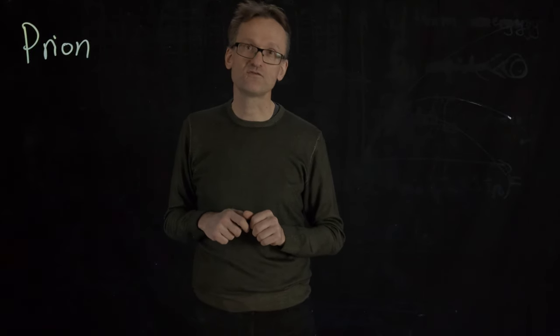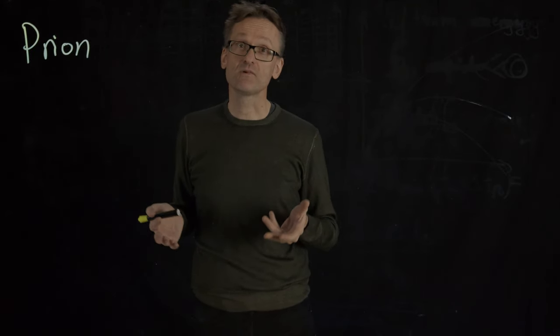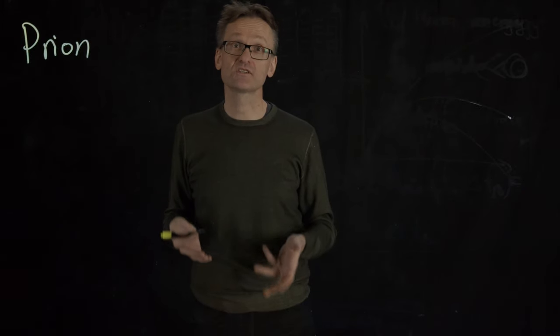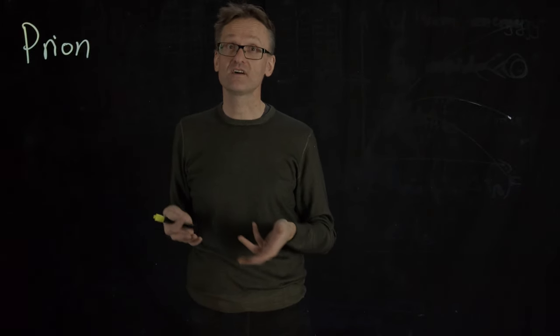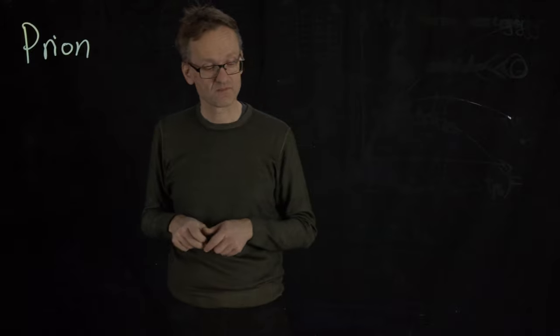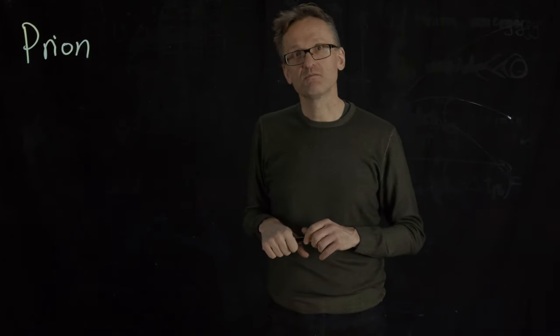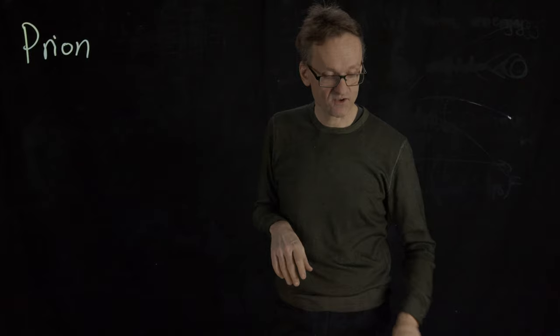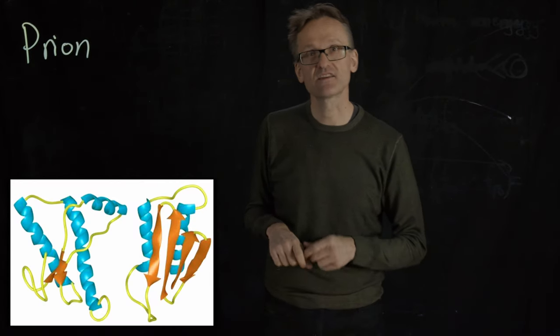And you might have heard that roughly at the same time we had this so-called mad cow disease, which is another example of a disease caused by prions. So we know a little bit more about this today. What most of these disease agents have in common is that they have a protein that can exist in two forms.